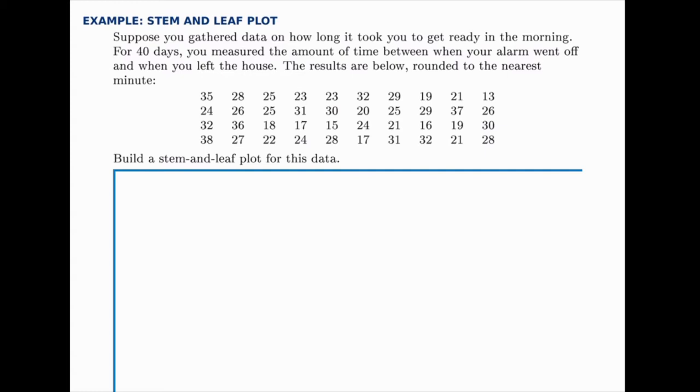For a stem and leaf plot, we divide each value into its stem and its leaf. The stems are generally the tens place, although you can tweak this and make it, for instance, the ones place. But in this case, since our values are two-digit values, the first digit will represent the stem and the second digit will represent the leaf.